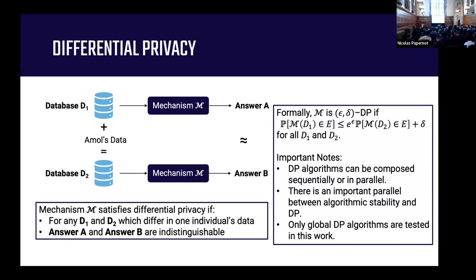There's an important parallel between algorithmic stability and differential privacy. Back in the day, machine learning theorists defined algorithmic stability as the output of an algorithm should not change very much when one data point changes. That's essentially what differential privacy is saying. The only difference is that machine learning theorists would allow themselves to make assumptions about the distribution of data, whereas differential privacy wants to protect privacy in the worst case, so you make no assumptions about the data distribution.